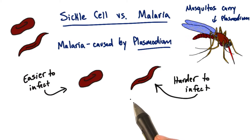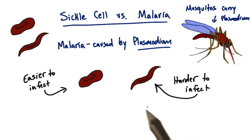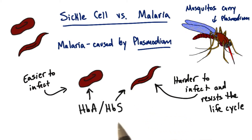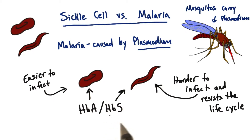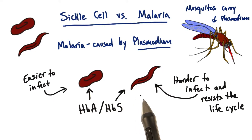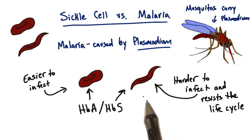But the sickle-shaped cells are harder for the parasite to infect, and even when it does infect them, the cell bursts open before the plasmodium has finished its life cycle. Having even one copy of the sickle cell mutation, or the HBS allele, increases resistance to malaria because a few of the cells are going to be more sickle-shaped, thus providing at least a little bit of resistance to plasmodium infection.